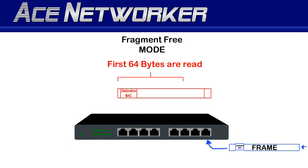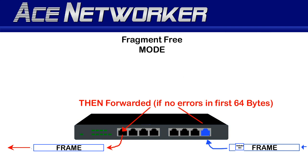The third switch mode is called fragment-free mode, which is sort of a combination of the first two. Fragment-free mode forwards the frame after receiving the first 64 bytes of the frame — note: bytes, not bits. Similar to cut-through mode, it opens a pathway to the destination port before all of the frame's bits are completely received. But fragment-free mode reduces the number of fragmented or errored frames forwarded, because reading the first 64 bytes allows the switch to determine most collision-type errors.